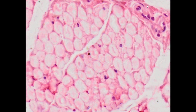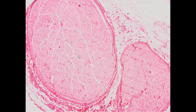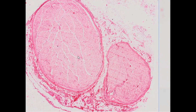Nerve fibers form bundles or bunches; there may be up to several hundred nerve fibers in one bundle. Each bundle is surrounded by a layer consisting mainly of fibroblasts, called the perineurium.